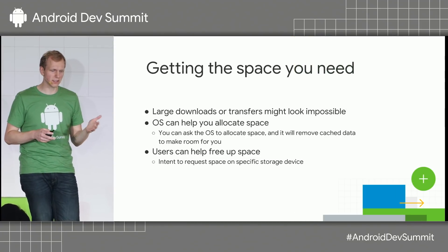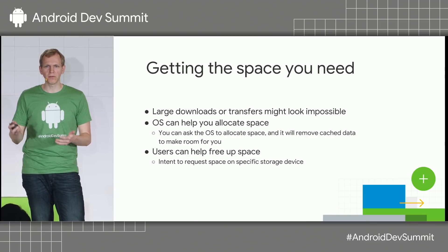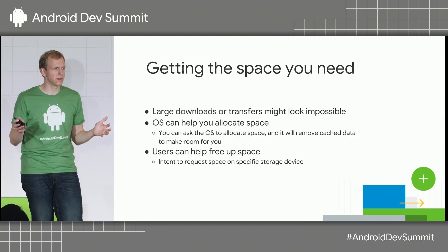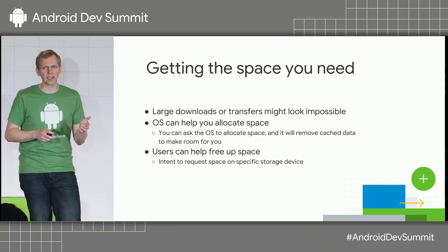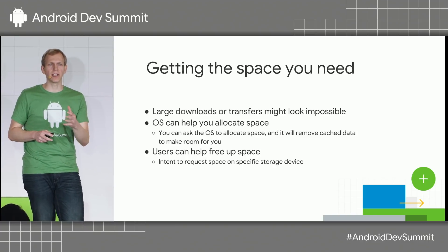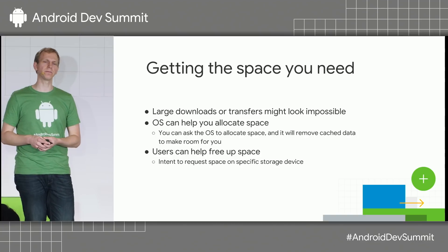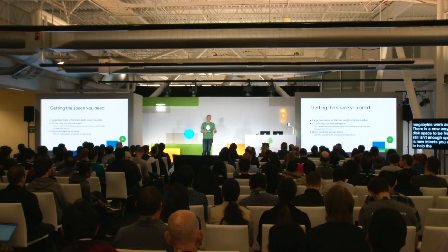Let's switch gears and talk about how the OS can help you get the disk space you need. Before O, if you wanted to do a large download — say one gigabyte — and only 500 megabytes were free, it might look impossible. But there's a new API in O where the OS will offer to delete cache files from other applications to help free up disk space for your operation. If there still isn't enough space, new intents let you get the user involved to help free up disk space.